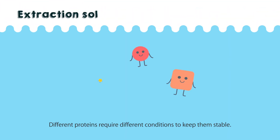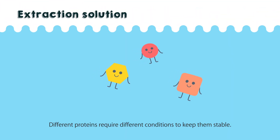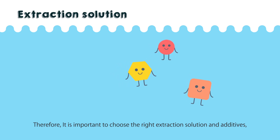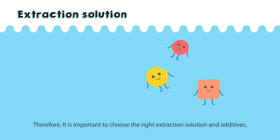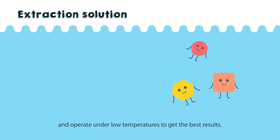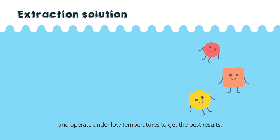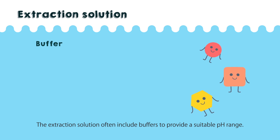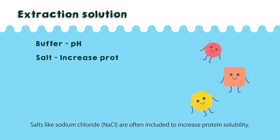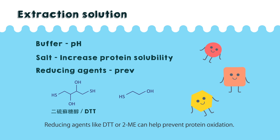Different proteins require different conditions to keep them stable. Therefore, it is important to choose the right extraction solution and additives and operate under low temperatures to get the best results. The extraction solution often includes buffers to provide a suitable pH range. Salts like sodium chloride (NaCl) are often included to increase protein solubility. Reducing agents like DTT or 2ME can help prevent protein oxidation.